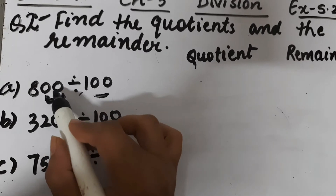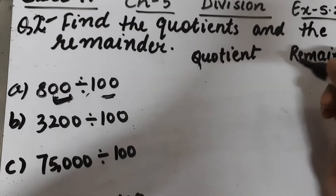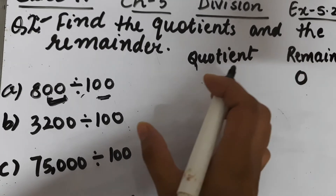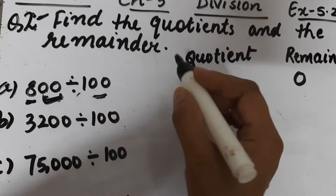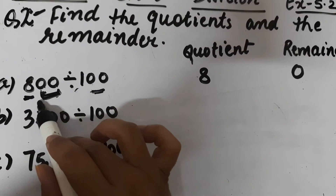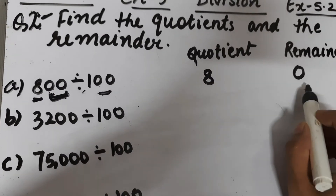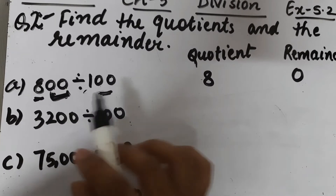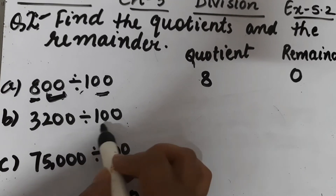So here, the number formed by the ones and tens place is 00, and 00 means 0, so the remainder will be 0. The remaining digit is 8, so that will be the quotient. If we divide 800 by 100, the quotient will be 8 and the remainder will be 0.